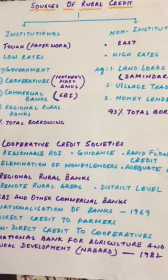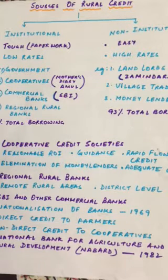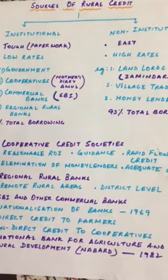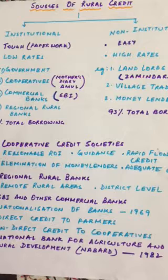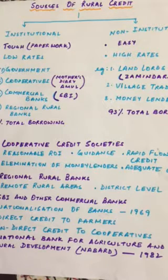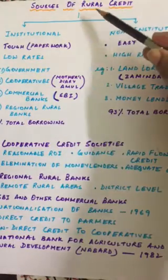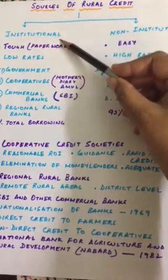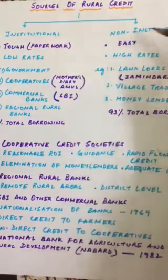Namashivaya students, we will be continuing with the chapter on rural development. We have been discussing rural credit in the previous class, and today we will be discussing the sources of rural credit. Basically, there are two sources: one is institutional sources and the other is non-institutional sources.